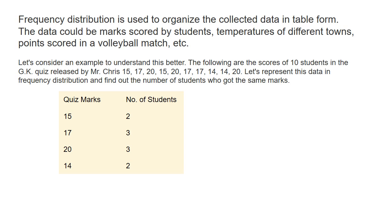In the left column, we have quiz marks, and in the right column, number of students. 15 marks come two times, so the number of students who got 15 is two. 17 comes three times, so three students got 17 marks. 20 marks come three times again, so the number of students is three. 14 marks come two times, so the number of students is two. This is what the frequency distribution table represents.